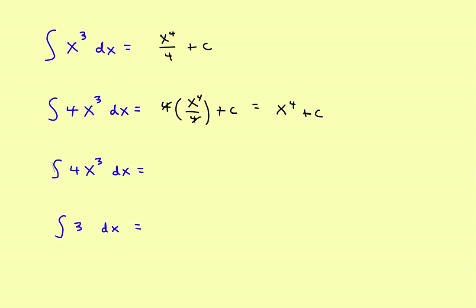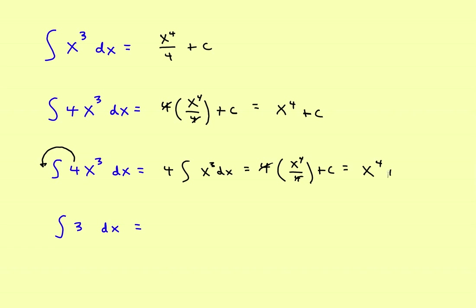Another way: whenever you have an integral sign, you can bring a constant outside the integral. So you could take the 4 and write it as 4 times the integral of x cubed dx. Then the antiderivative of x cubed is x to the 4th divided by 4, plus C. The 4's still cancel out and you get exactly the same answer: x to the 4th plus C. On any integral, it's your choice whether you leave the constant inside or bring it outside.